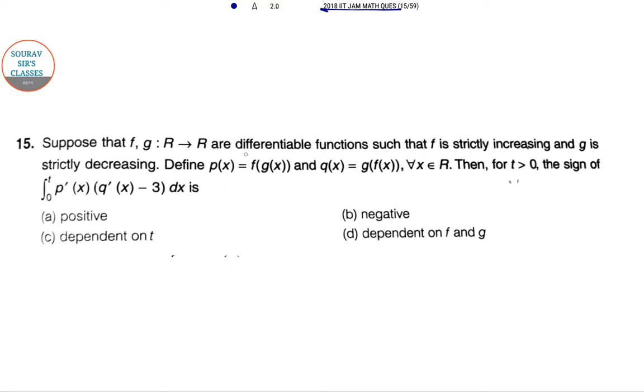Here we have differentiable functions where f is strictly increasing, meaning u_n > u_(n-1) with no equal to, and g is strictly decreasing so the sign changes to less than. Define p(x) = f(g(x)) and q(x) = g(f(x)), function of a function. Then we need to find the sign of this particular formation.